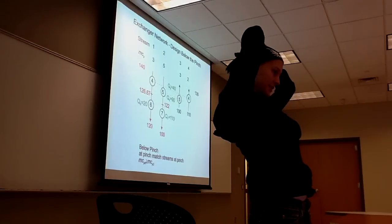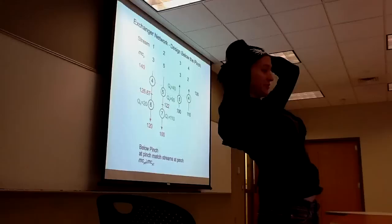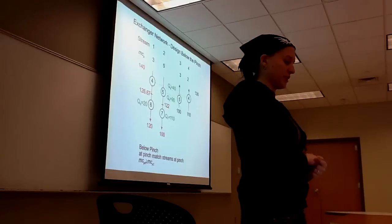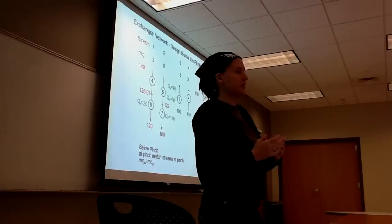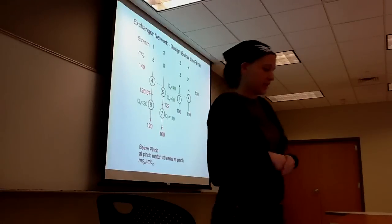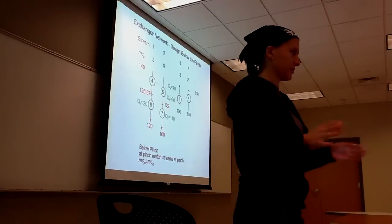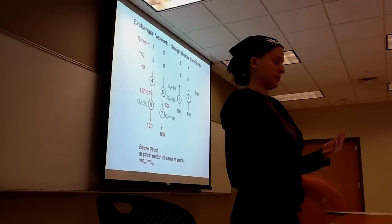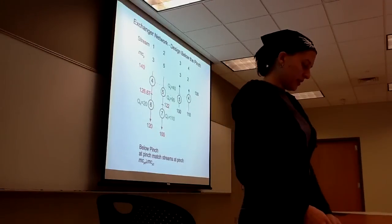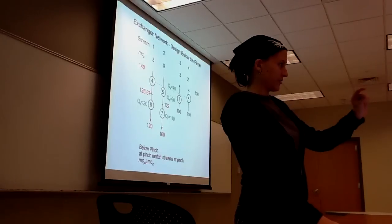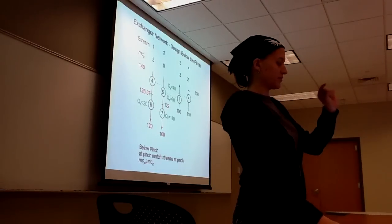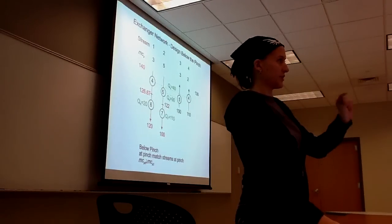You match streams, you add heat exchangers to keep all of your criteria straight, above and below the pinch. Below the pinch is less picky compared to above the pinch. Below, you can split streams if you need to. Above the pinch, you can't really do that. So, the pinch is that one place where mass and energy requirements are small so that it constrains your equipment.